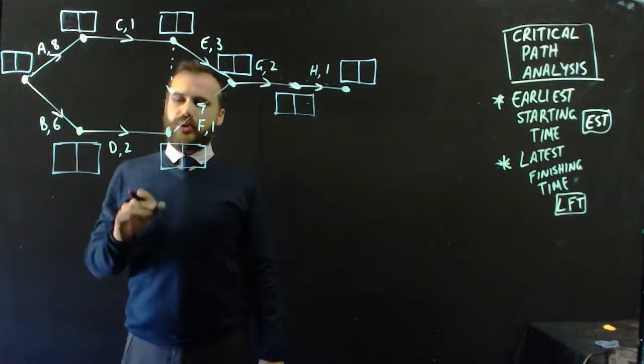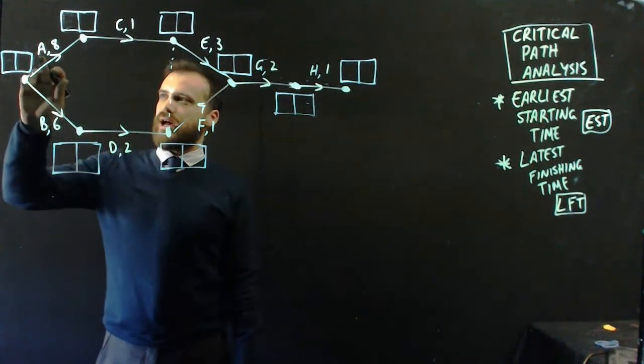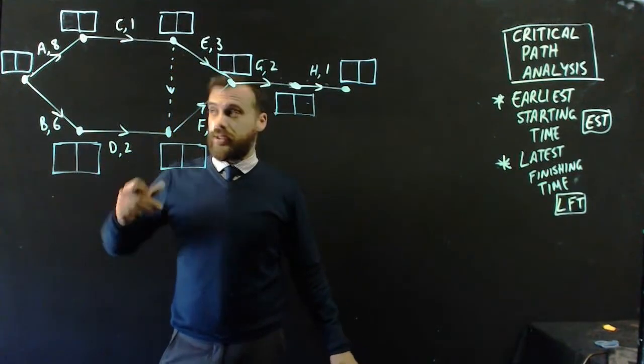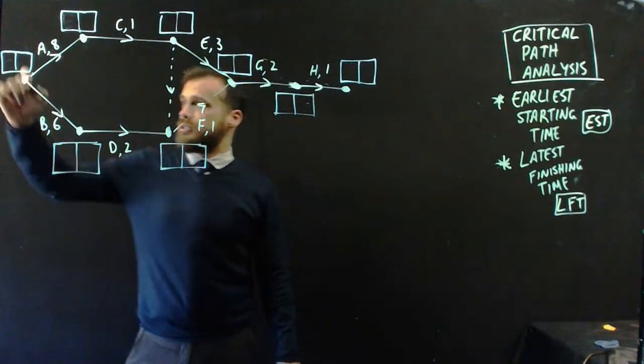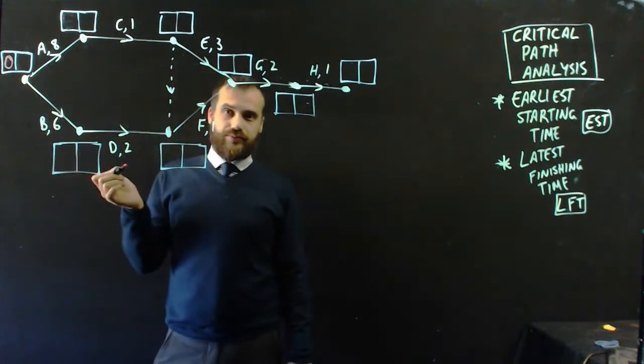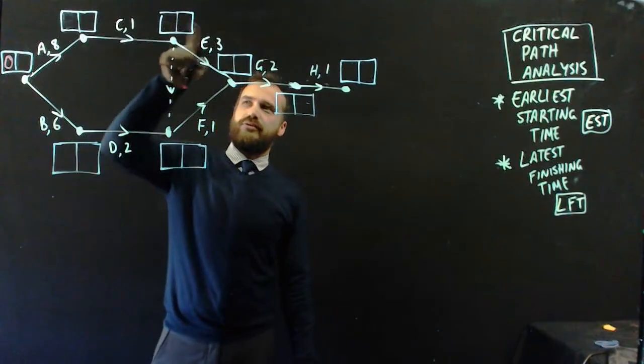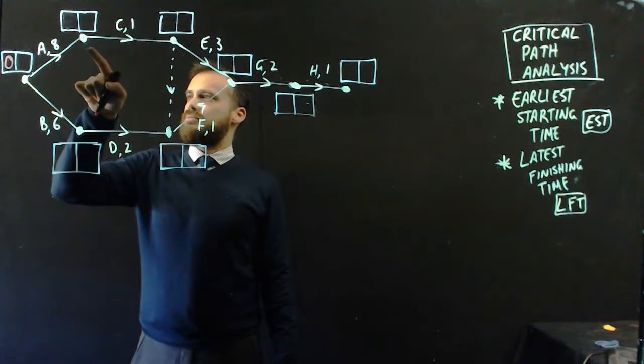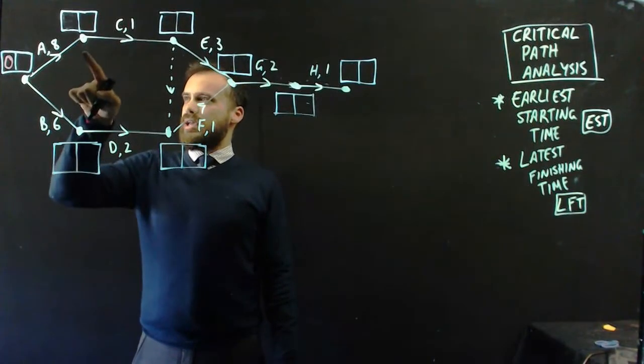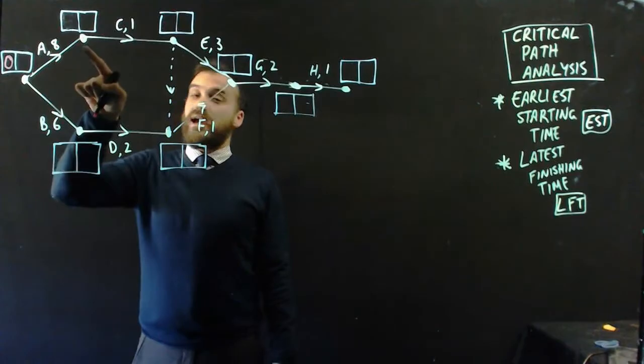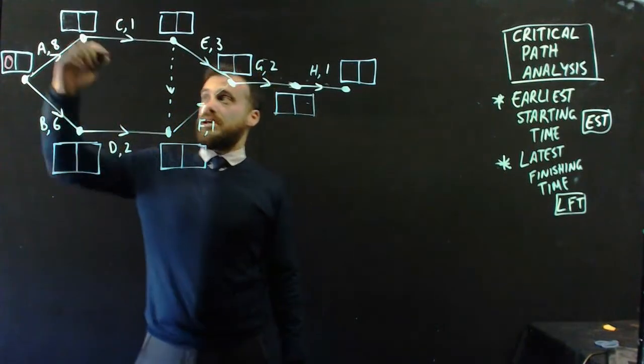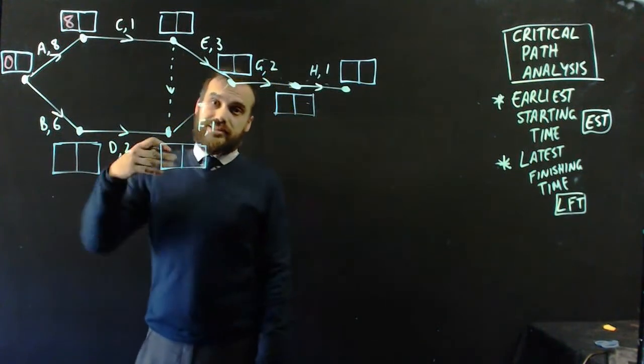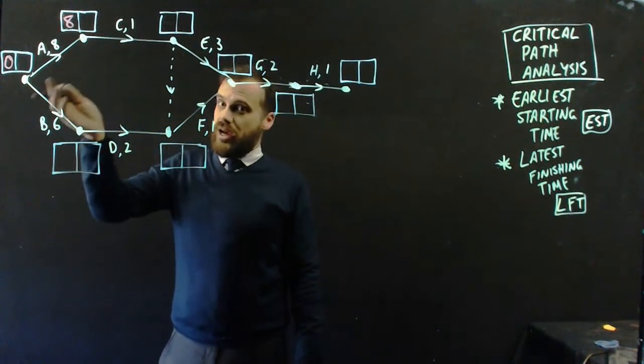Now this first double box is really straightforward. What's the earliest that A or B can start? Well, they can start as soon as somebody says go, right? There's no predecessors here. So they just start at time zero. Straightforward. Let's follow this one for a second. When can C start? Or, another way to say it, when does A end? A ends after eight hours, which means that C can start after eight hours. Now that's its earliest starting time. It can't start at seven hours because A won't be finished yet and A is a predecessor.